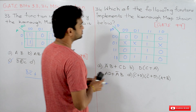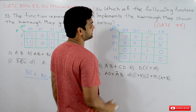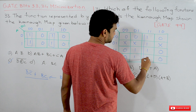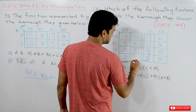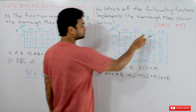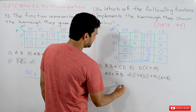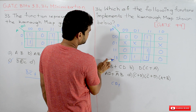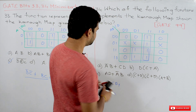Now coming to the second bit from GATE 1999: which of the following functions implements the Karnaugh map shown below? This is a straightforward question. The maximum possible subcube gives C D, and the other subcube gives A. Both are essential prime implicants.